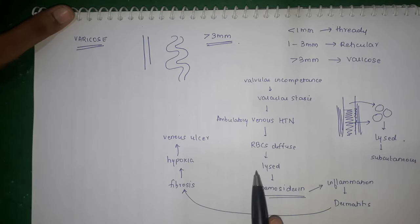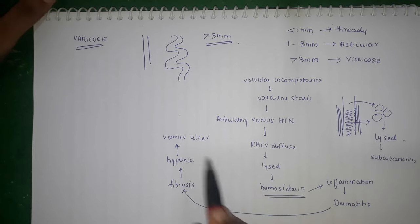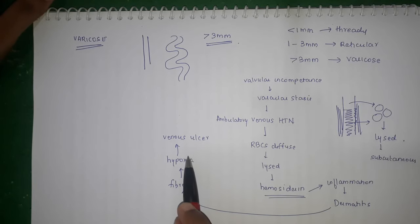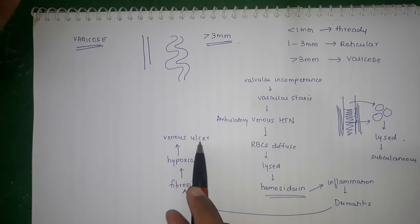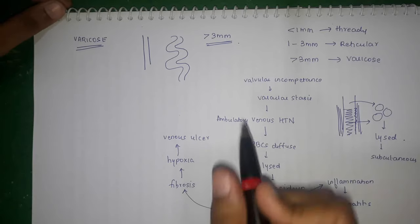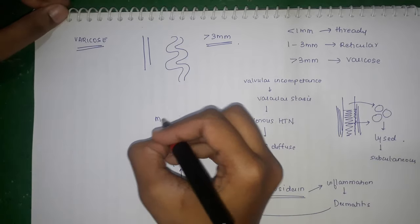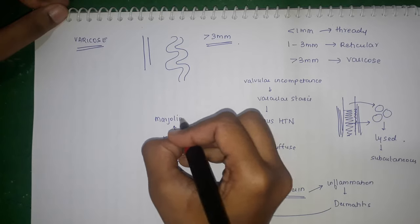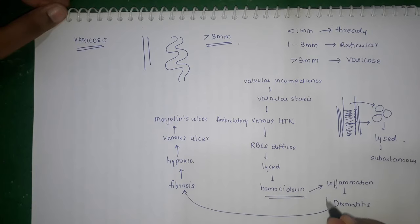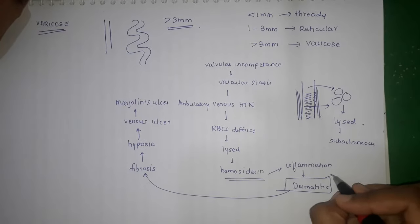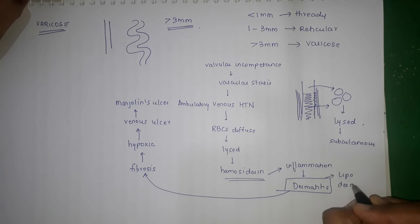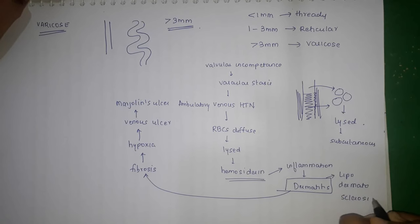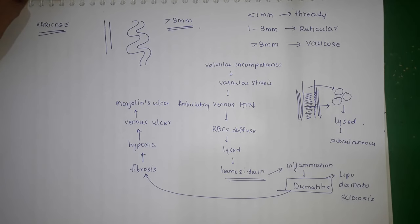All these things can occur if varicose veins are left untreated. Once a venous ulcer develops it is very difficult to treat, and if left untreated there is a chance it can turn malignant — a Marjolin's ulcer. This dermatitis occurring in the venous system is called lipodermatosclerosis, because of the extensive fibrosis and dermatitis involved. Hope this video was useful. We'll focus on more points related to varicose veins in the next videos.